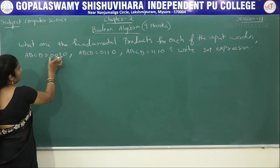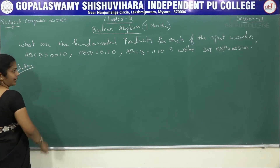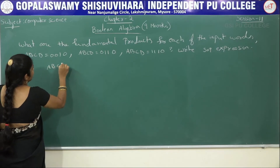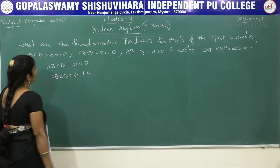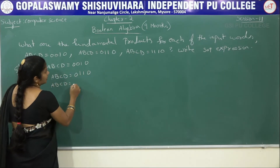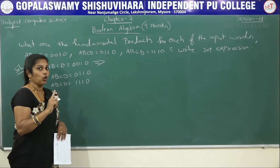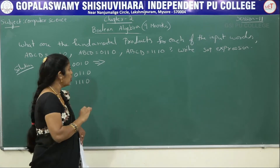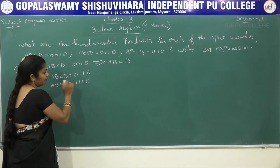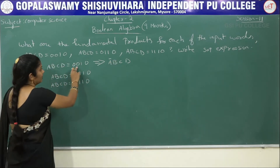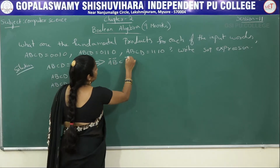In the solution, first write down the variables and their values. ABCD = 0010, the second: ABCD = 0110, and the last: ABCD = 1110. In minterm, if we have zero, it represents the complement. So for ABCD = 0010: A is 0 → Ā, B is 0 → B̄, C is 1 → C (no complement), D is 0 → D̄.